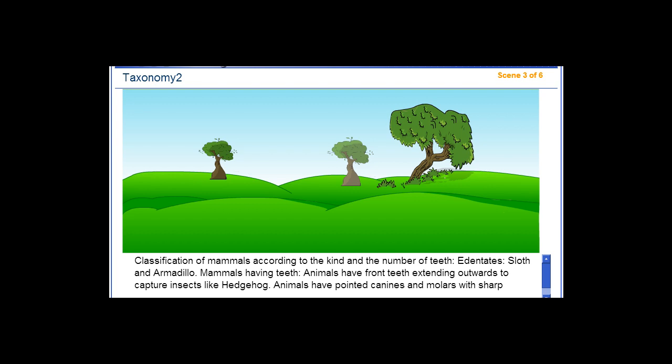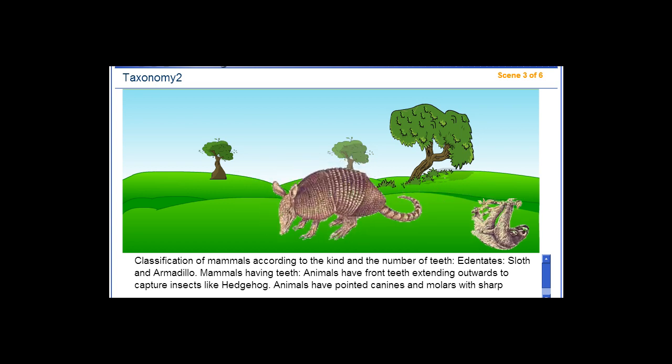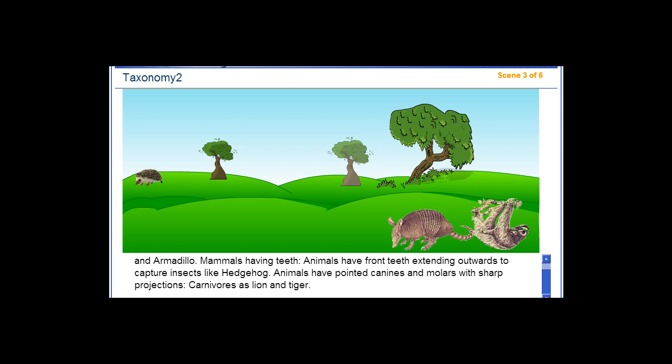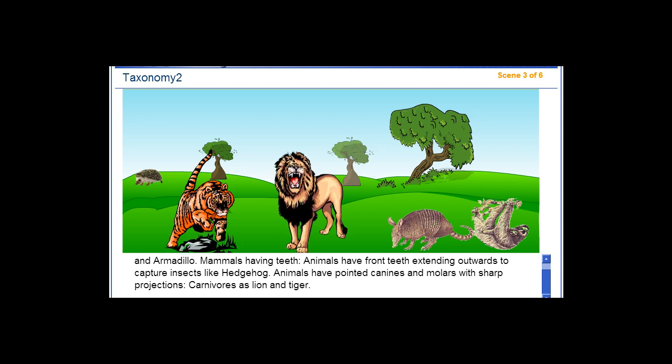Classification of mammals according to the kind and number of teeth. Edentates include sloth and armadillo. Mammals having teeth include animals with front teeth extending outwards to capture insects, like hedgehogs. Animals have pointed canines and molars with sharp projections, such as carnivores like lions and tigers.